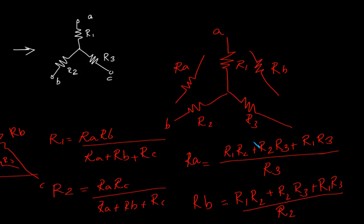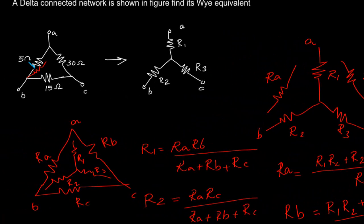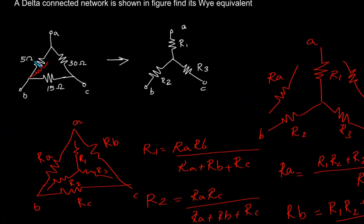So that is how we can solve this problem. We have to multiply 5 ohm and 15 ohm: 5 times 15, divided by the sum of resistances in the loop — 15 plus 5 is 20, and 20 plus 30 is 50.